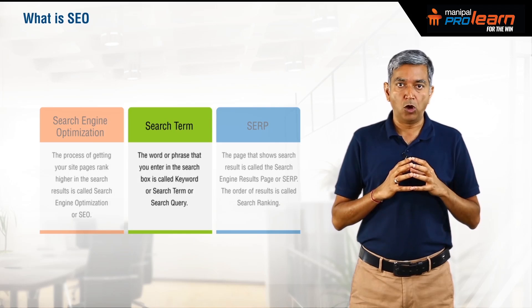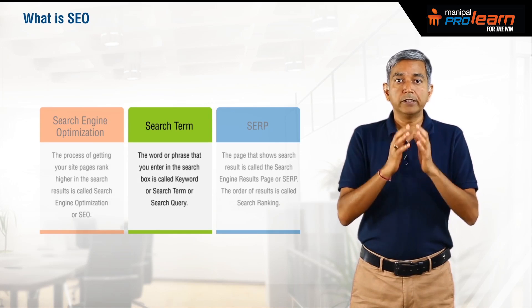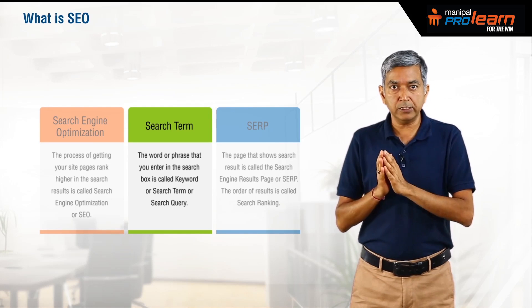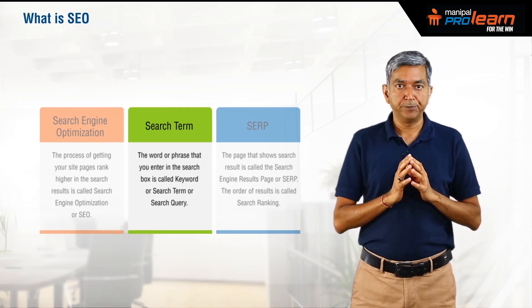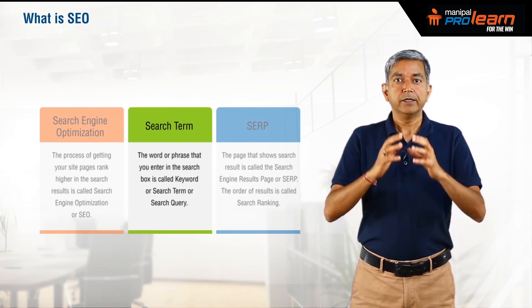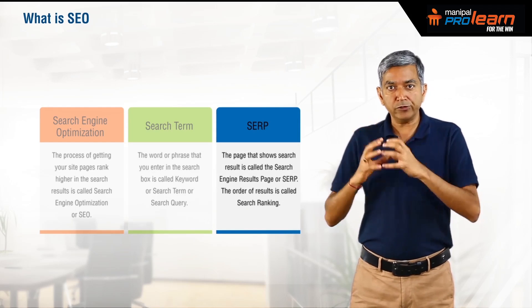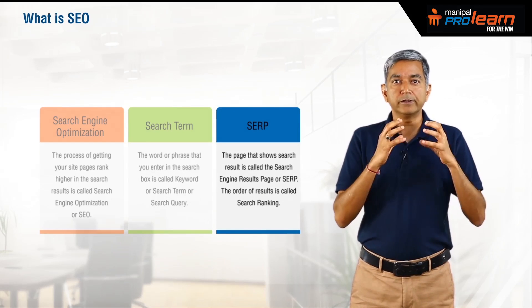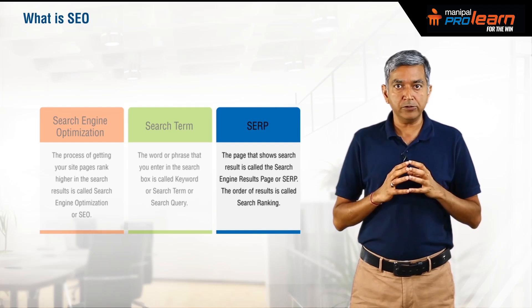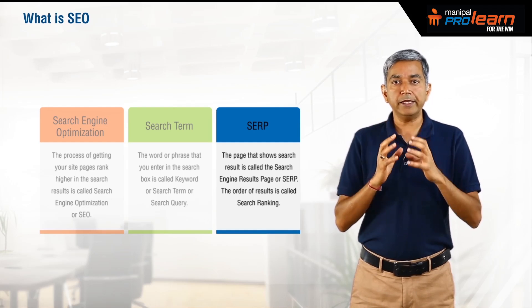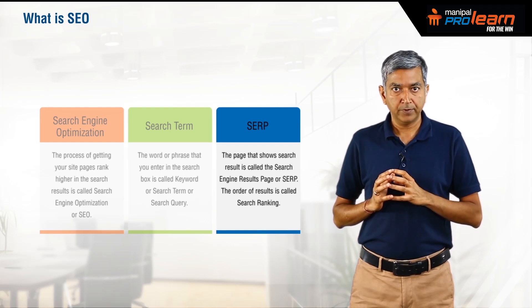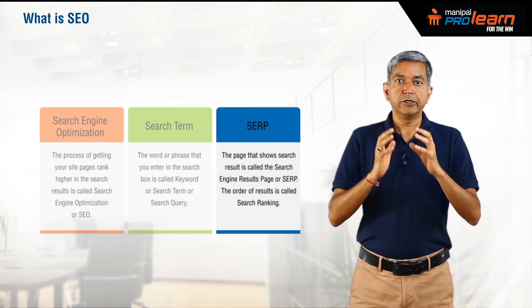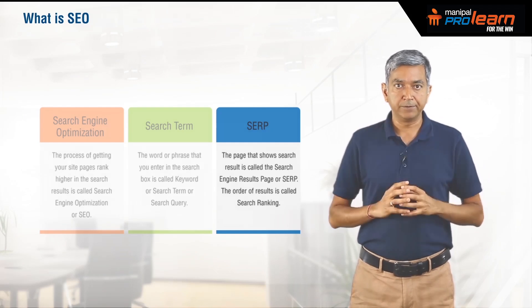The words or phrases you enter in the search box are called keywords, search terms, or search queries. The page that shows search results is called the Search Engine Results Page, or SERP. The order of results is called search ranking.